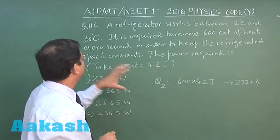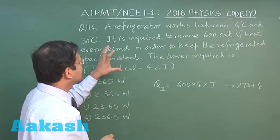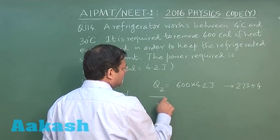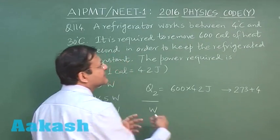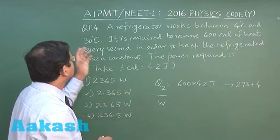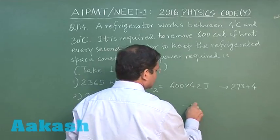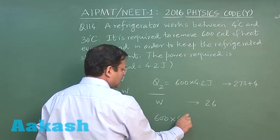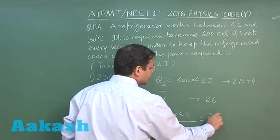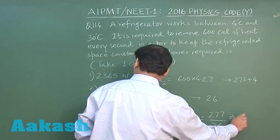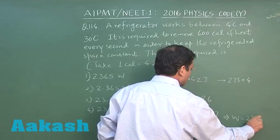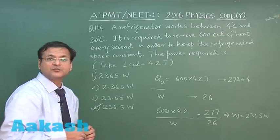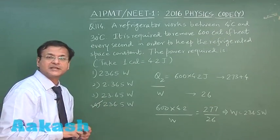Now they are asking you, in order to keep the refrigerated space constant at constant temperature, the power required, power required that means W is required. W is what? W is nothing but, it is the difference of temperature. It will be proportionality into that, 30 minus 4 that is equal to 26. So ultimately what you have to do? You have to write it as 600 into 4.2 divided by W is equal to this 277 divided by 26. And you have to calculate the value of W. That comes out to be 236.5 watt. So I will be marking answer fourth for this question 114.